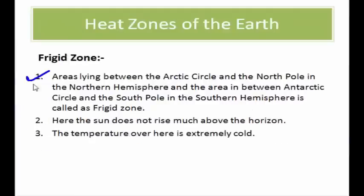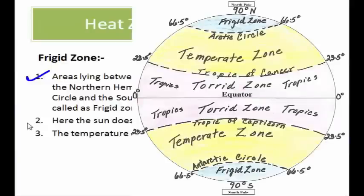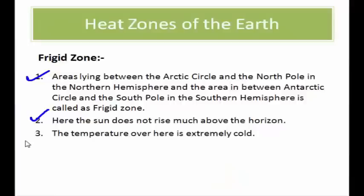The third zone is the frigid zone — the word frigid means frozen. This zone lies between the Arctic Circle and the north pole in the northern hemisphere, and between the Antarctic Circle and the south pole in the southern hemisphere. The sun does not rise much above the horizon here. As we move away from the equator towards the poles, the sun rays decrease, making temperatures extremely cold. These regions are permanently frozen — all you will find here is ice and glaciers.